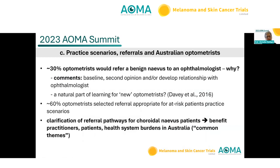About 30% of optometrists would refer a benign nevus to an ophthalmologist. Comments from the survey mentioned: it's great to have a baseline; it's good to get a second opinion; sometimes it's to develop a relationship with the referring ophthalmologist — interactive healthcare is a fantastic thing, especially in eye care and eye tumour care. It's also a natural part of learning for new optometrists. What would help is clarification of referral pathways for choroidal nevus patients.